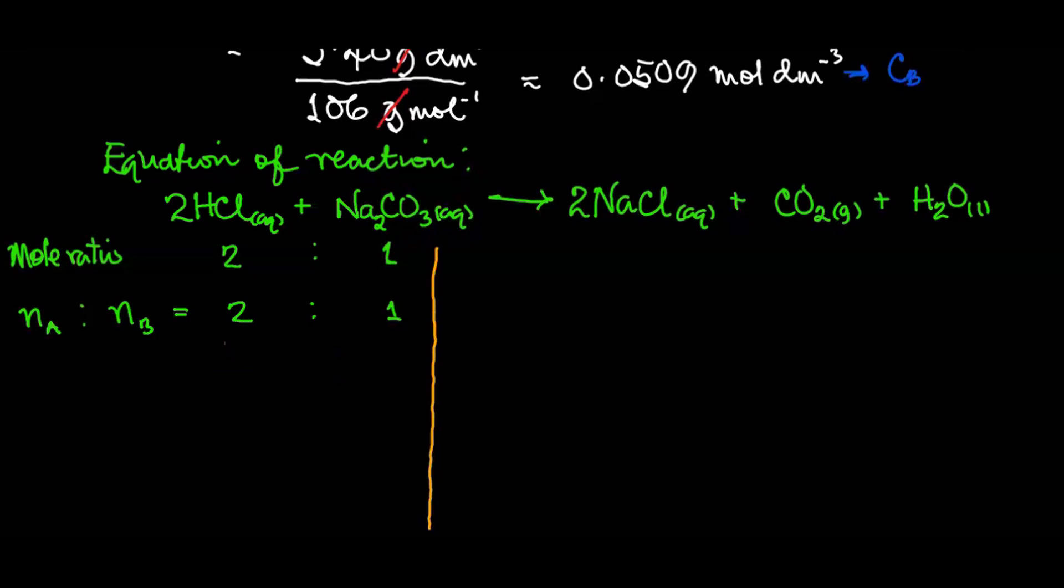So using CAVA over CBVB equals NA over NB. What's the ratio of NA over NB? That's 2 to 1, 2 over 1. So what are we looking for? We are looking for VA, so we make this subject of formula. That would be VA equals CB times VB times 2, all over CA times 1.